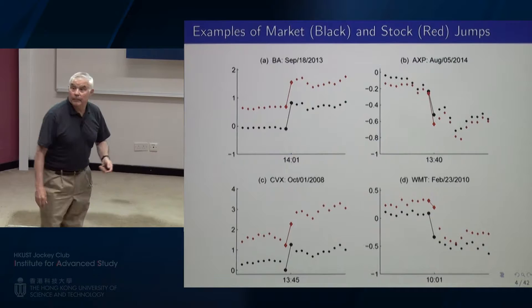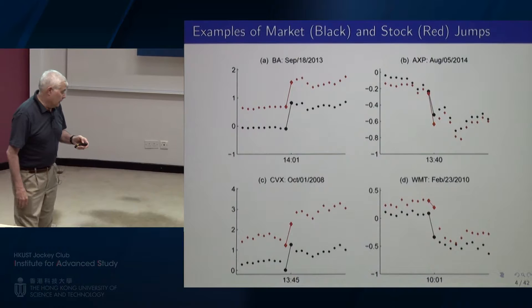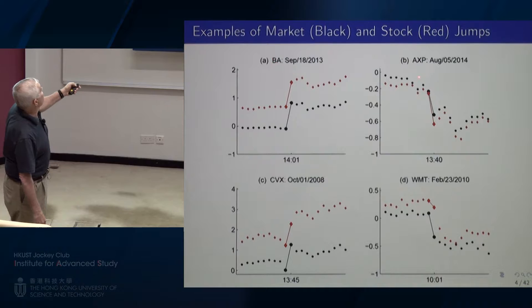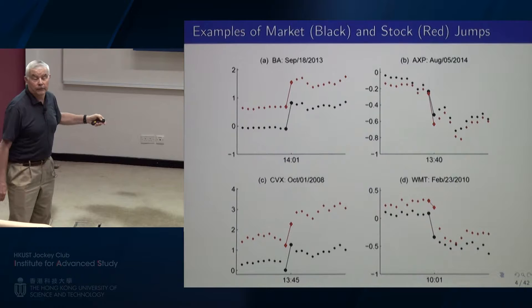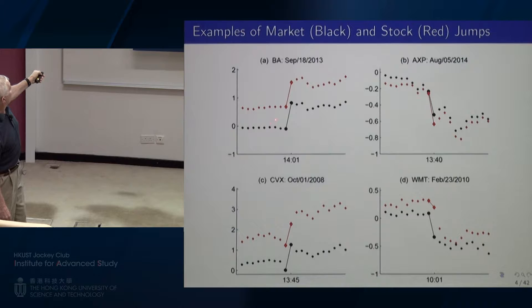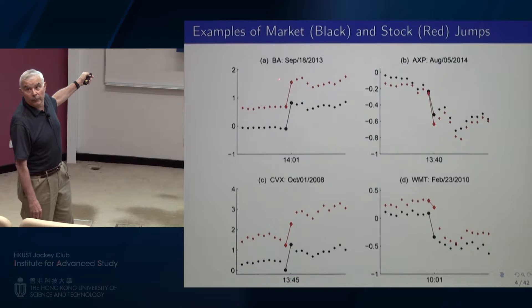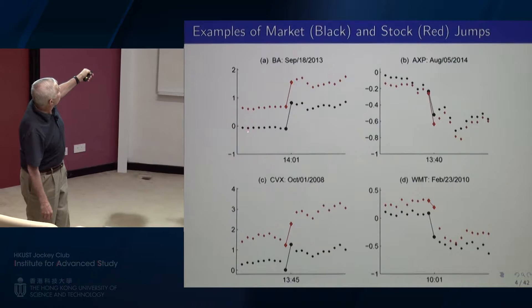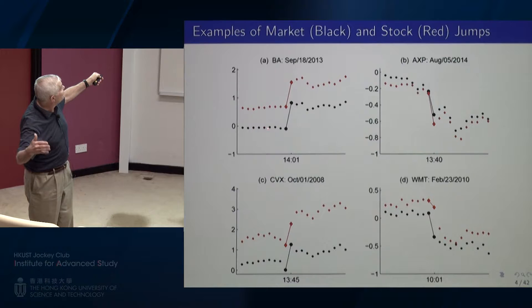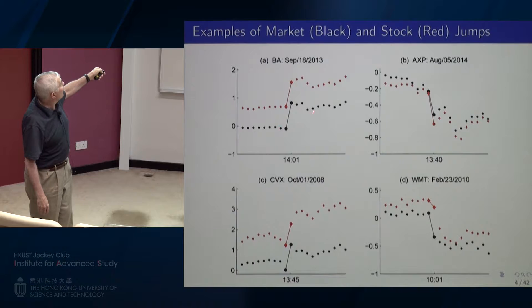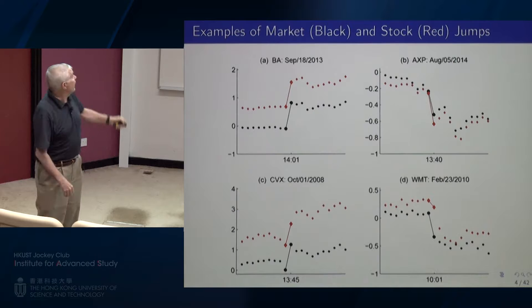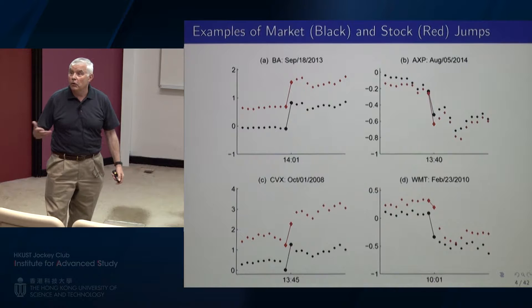Here are some empirical examples. This is one-minute data from September 18, 2013. The black is the market recorded at one-minute intervals, and the red is Boeing (ticker BA). Notice how the market is moving along diffusively, then over one minute it takes a leap, and then goes back to diffusing. Sampled at one-minute intervals, it looks exactly like a jump. This is why we use jump models.